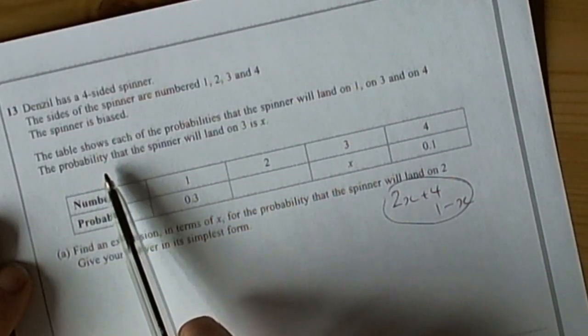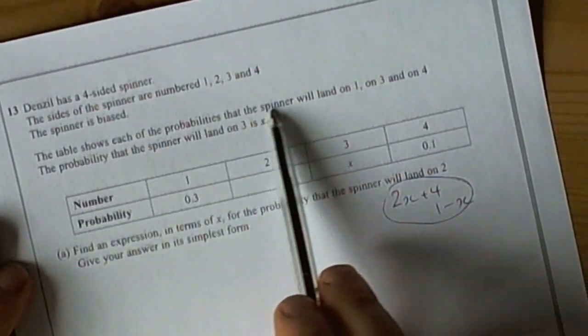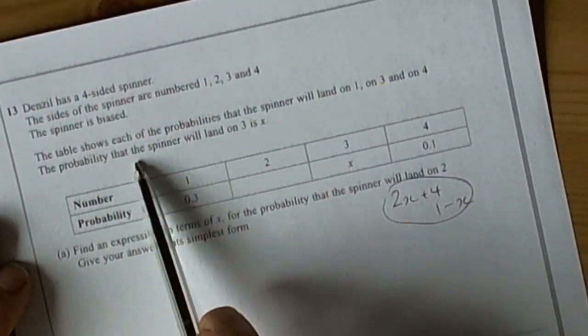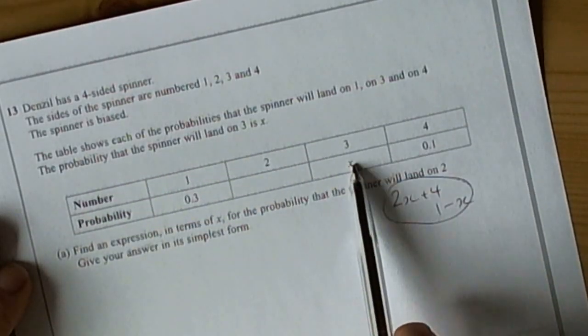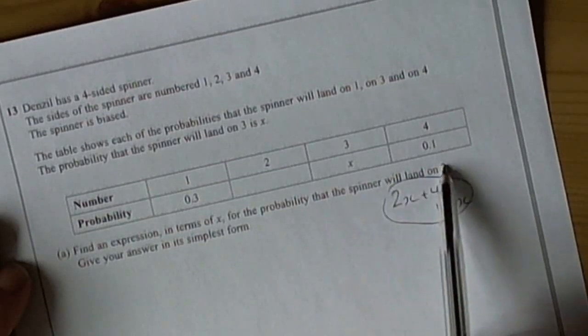So we've basically got the idea that the size of the spinner is number, the spinner is biased, the table shows the probabilities will land on 1, 3 and 4. And the probability that it will land on 3 is x, so we want to work out the probability that the spinner will land on 2.